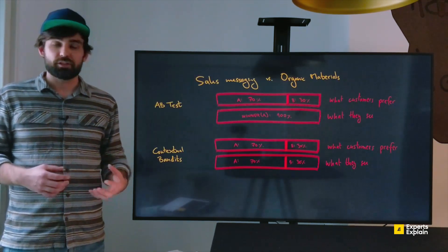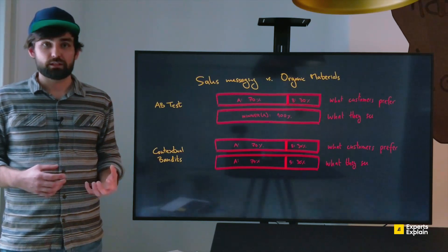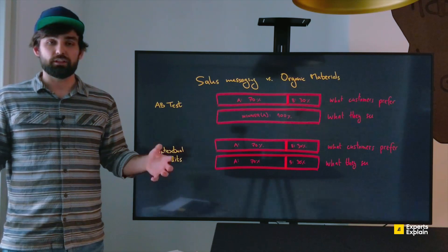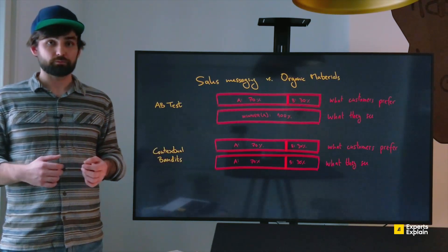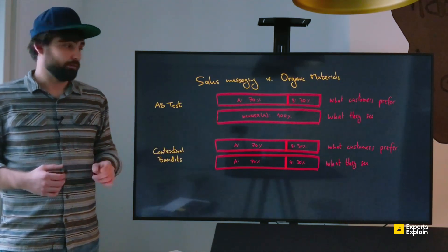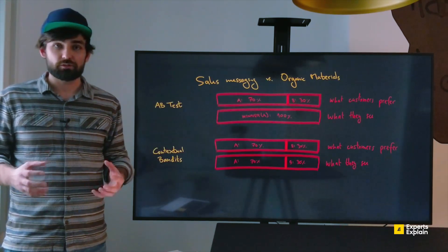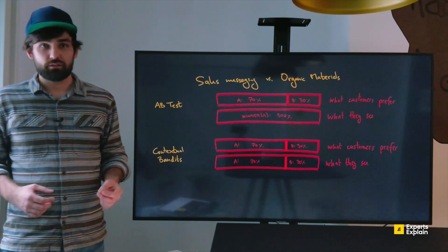After we reach significance in the A/B test, we would show the messaging about sales to the entire customer base. What just happened however is that you misunderstood 30% of your customers and showed them something they don't care about.